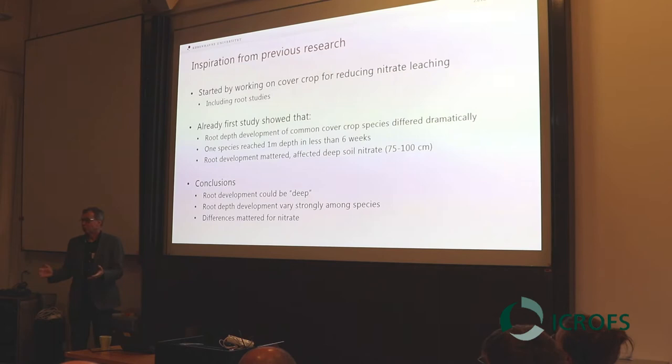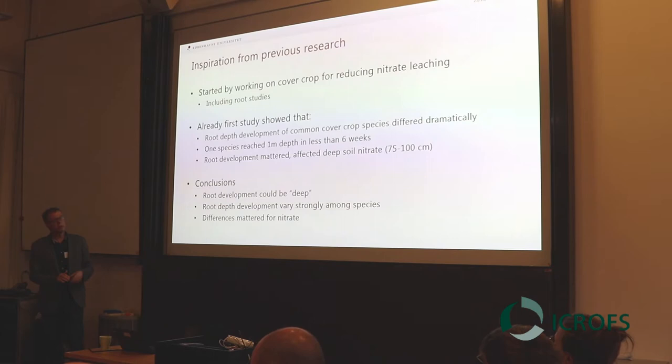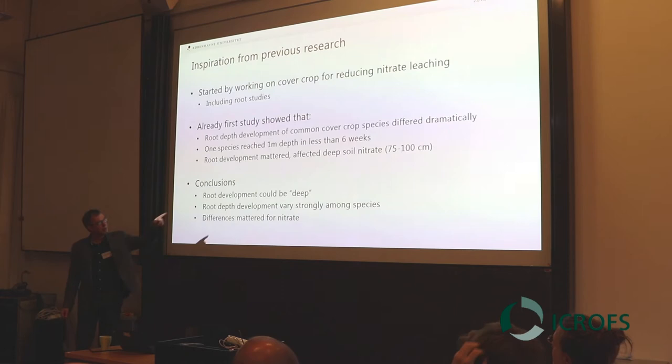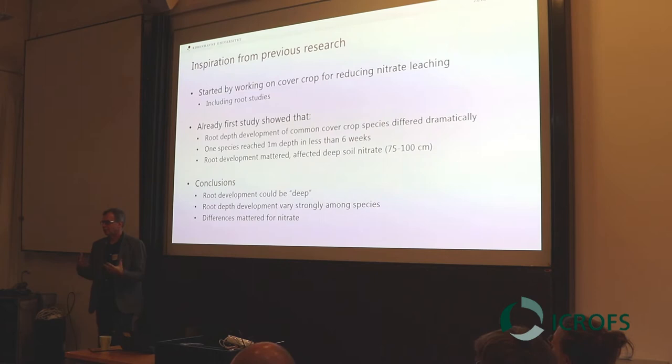The first thing you could see was that the depth development of these species varied dramatically — from the slowest to the fastest there was a huge difference. One of the species had a lot of roots down to a meter after just six weeks of early growth. When we looked at the soil sampling and analysis, it was clear there was an effect of these differences in root depth development. In the deepest soil layer analyzed, down to 100 centimeters, there was a clear relationship between root depth and soil nitrate. So there was something to go for.